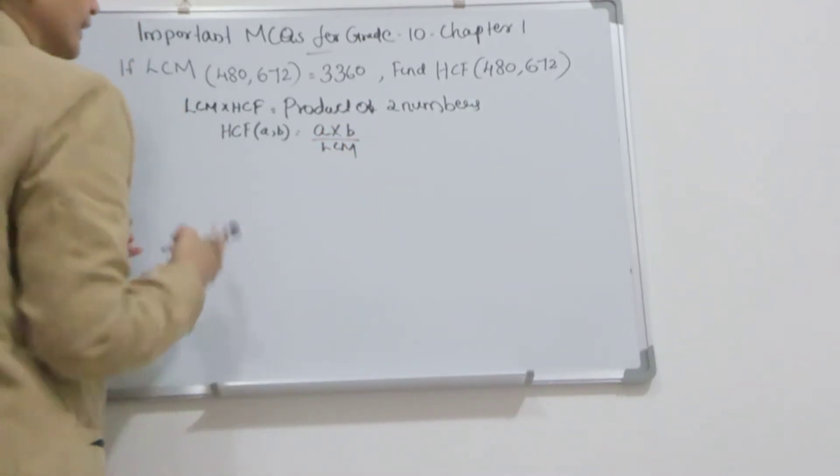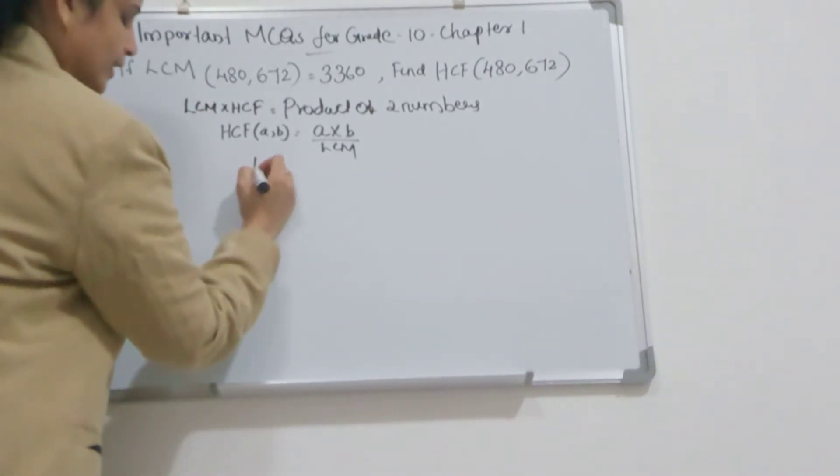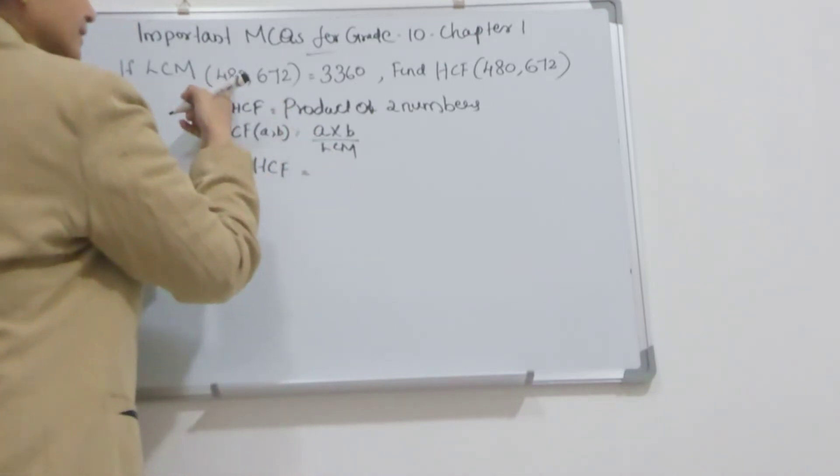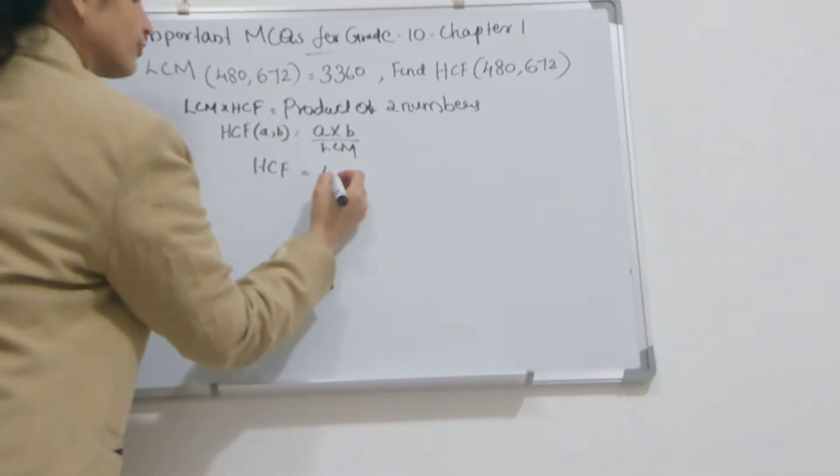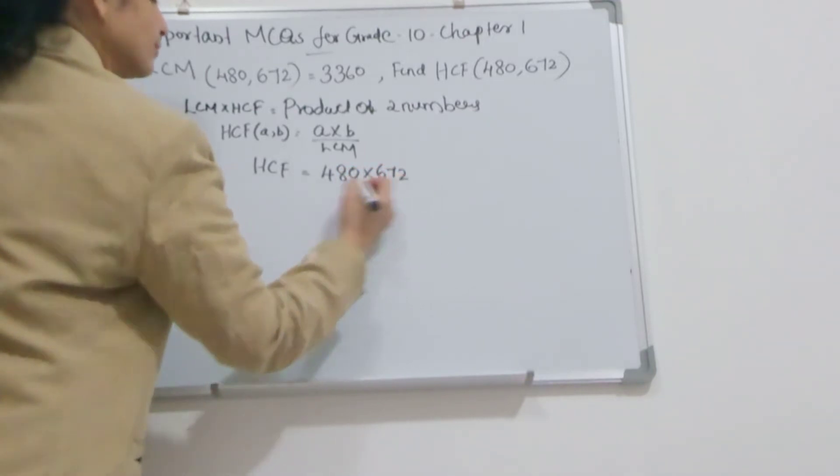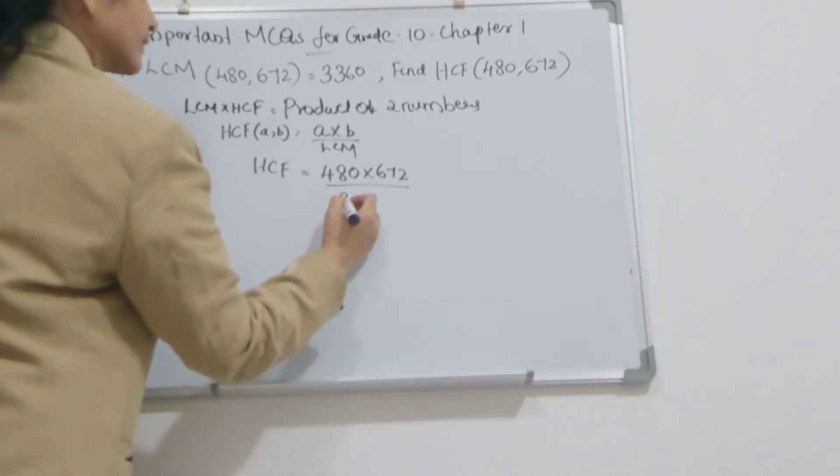So here, HCF is what you have to find. HCF equals A × B. This is A, this is B. So 480 × 672 divided by, what is LCM? 3360.